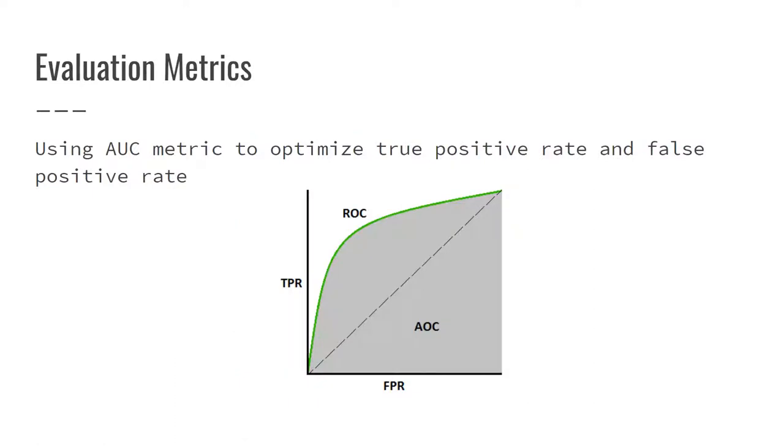For the evaluation metrics, we will be using accuracy. We will also use ROC curve by determining the area under the curve, or AUC, where we want to maximize true positive rate and minimize false positive rate.